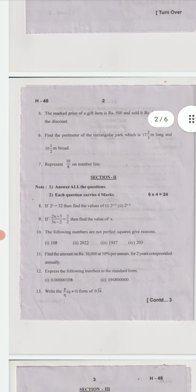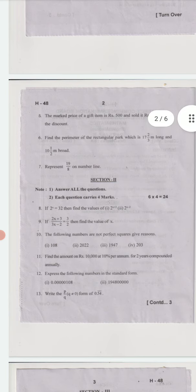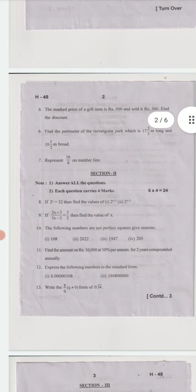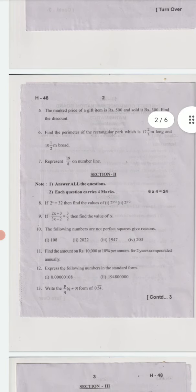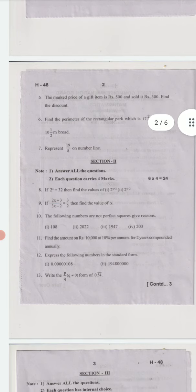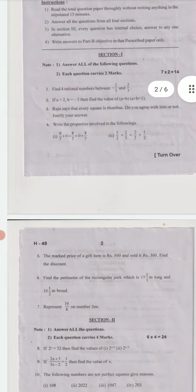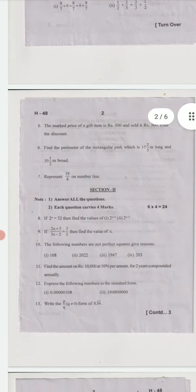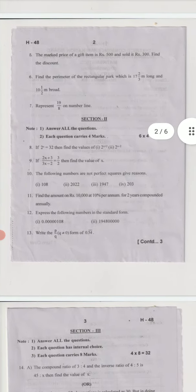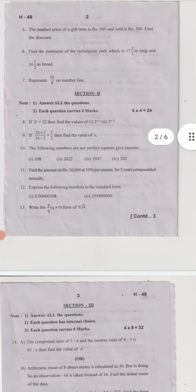We should find out those values. Ninth question: if (2x+3)/(3x-2) = 3/2, then find the value of x. Tenth question: the following numbers are not perfect squares, give reasons. In Section 1, all are easy questions only. Section 2 also has easy, basic questions only.